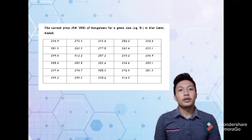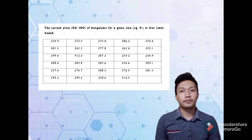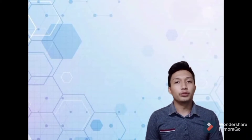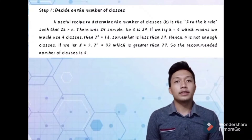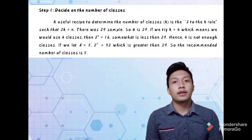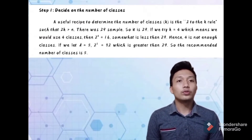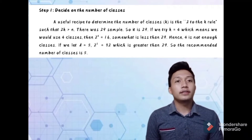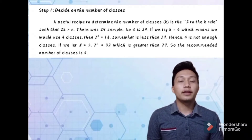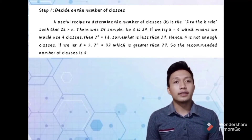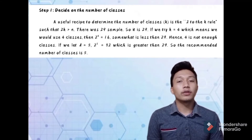The table shows the current price of bungalows in Alustah Kedah. Firstly, I will explain about class and frequency distribution. There are five steps in the class and frequency. For the first step, decide on the number of classes. Use research to determine the number of classes K in the 2-to-the-K rule such that 2 to the power of K is greater than N. There were 29 samples, so N is 29. If we try K equal 4, meaning we would use 4 classes, then 2 to the power of 4 equals 16, which is less than 29. Hence, 4 is not enough classes.